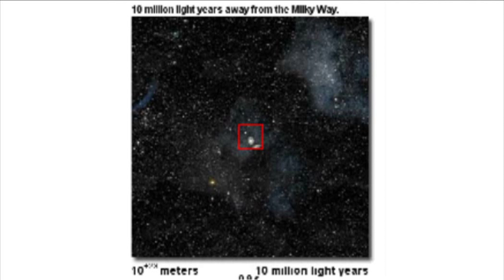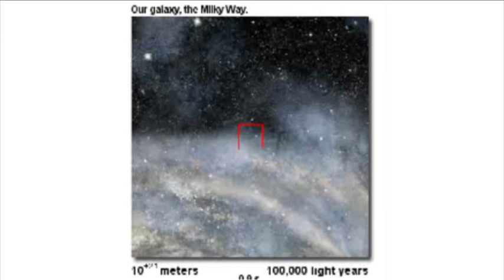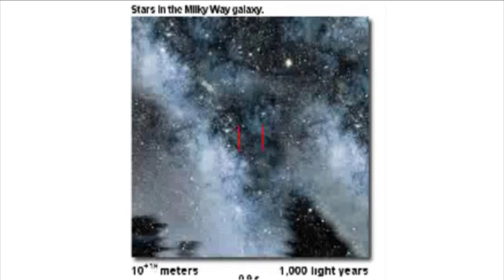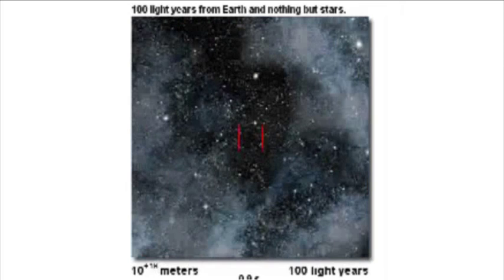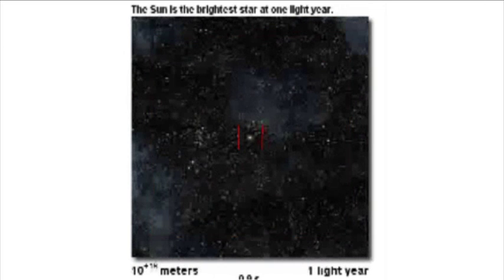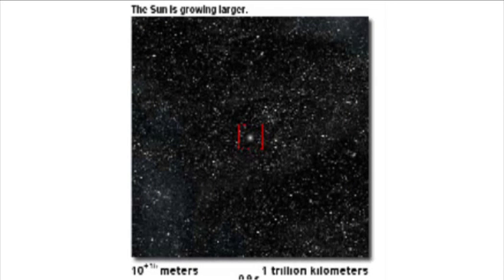I want you to have a look at this animation. You can see up the top 10 million light years away from the Milky Way and we're going to be moving in an order of magnitude closer — 1 million light years, our galaxy the Milky Way, stars at the rim of the Milky Way Galaxy, stars in the Milky Way Galaxy, 100 light years from Earth, the Sun is the brightest star at one light year, and the solar system from 100 billion kilometres away.